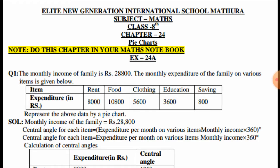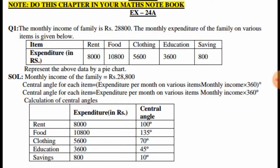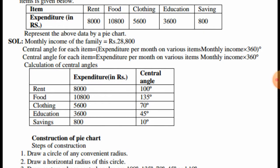We can start Exercise 24A. In question number 1, the monthly income of a family is rupees 28,800. The monthly expenditure of the family on various items is given: rent 8,000, food 10,800, clothing 5,600, education 3,600, and saving 8,000. We have to represent this data by a pie chart.